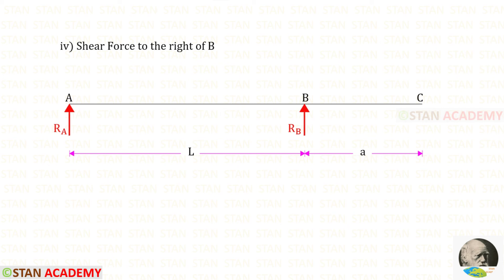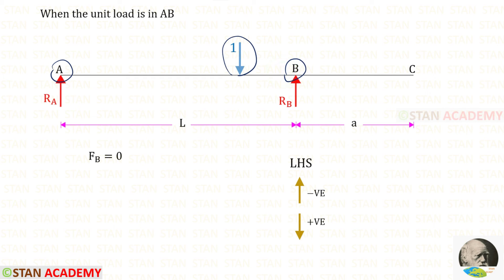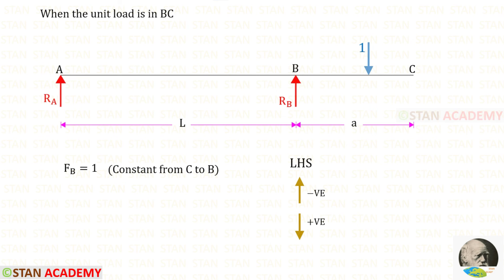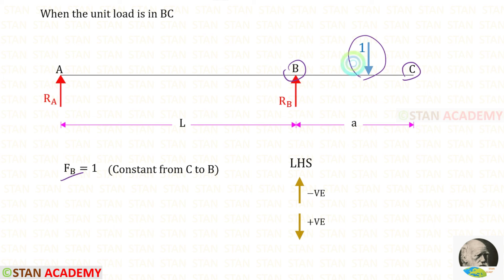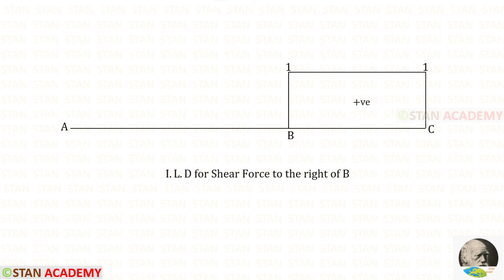Now we are going to draw the ILD for the shear force to the right of B. First, let us keep the unit load between A and B. Up to point B on the right side there is no load, so when the unit load moves from A to B, the shear force to the right of B will be 0. Now let us keep the unit load between B and C. If the unit load moves from C to B, the shear force to the right of B will be 1 and it will be constant from C to B. It will be positive because in the left hand side rule, downwards is positive. This is the ILD for the shear force to the right of B.